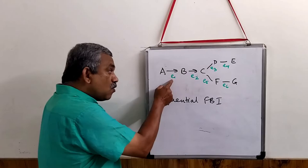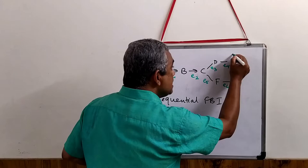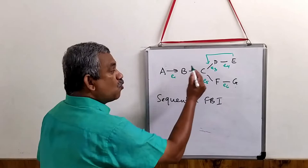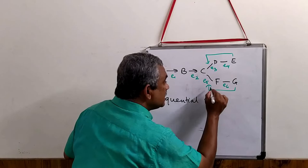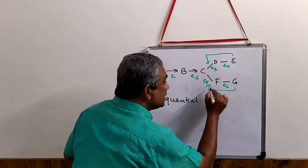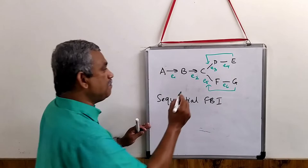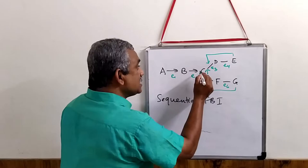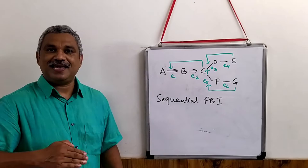Instead, E can inhibit enzyme E3, and G can inhibit enzyme E5. So if product E is inhibiting enzyme E3, the concentration of C will increase. Similarly, G can also inhibit enzyme E5. By regulating the activity of these two enzymes, the concentration of intermediate C increases.